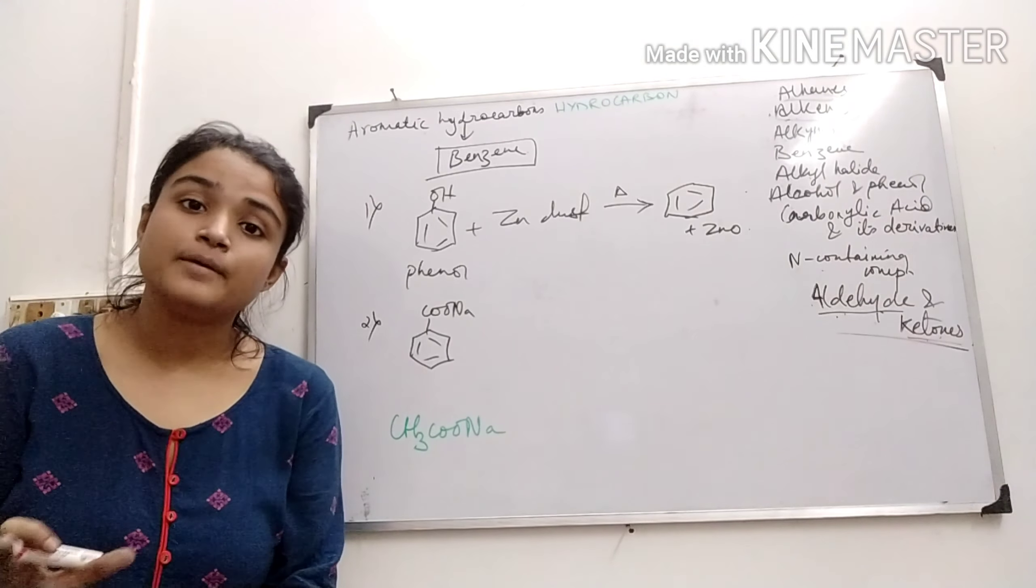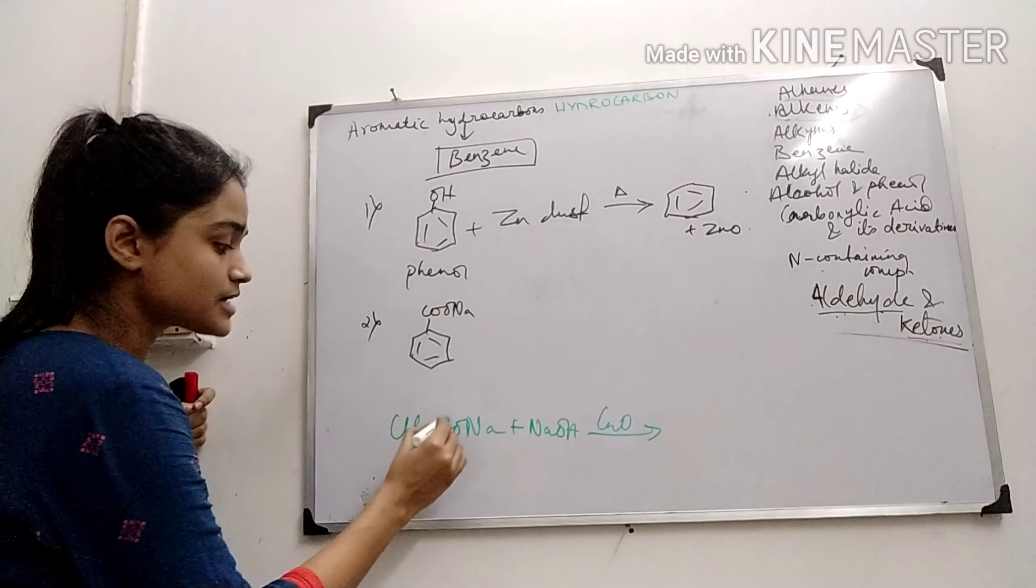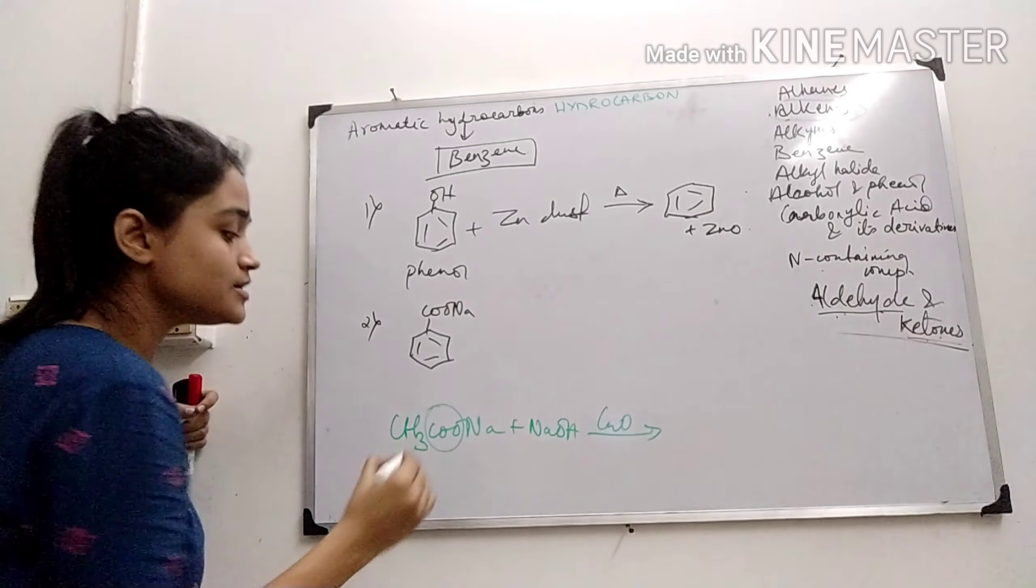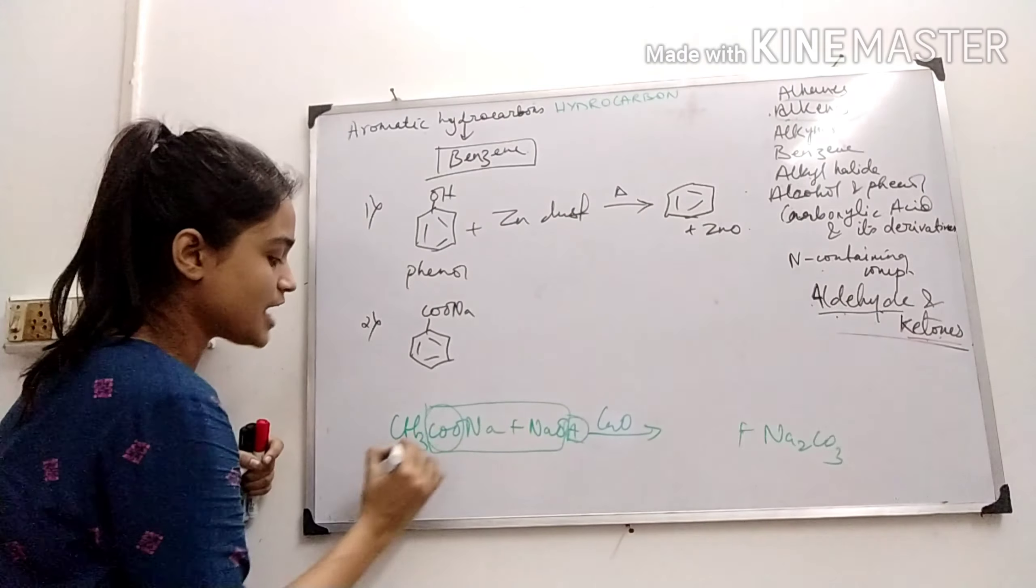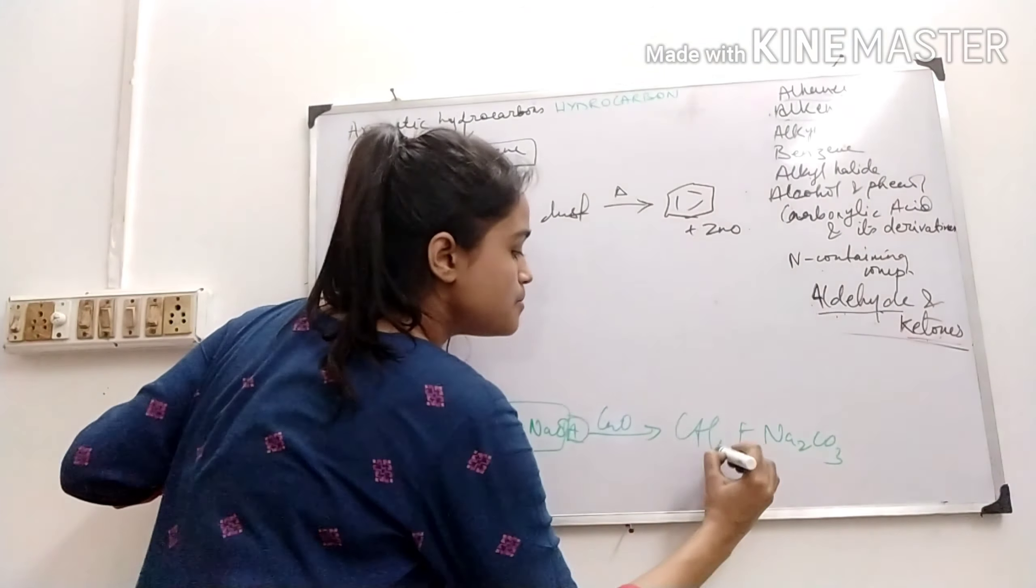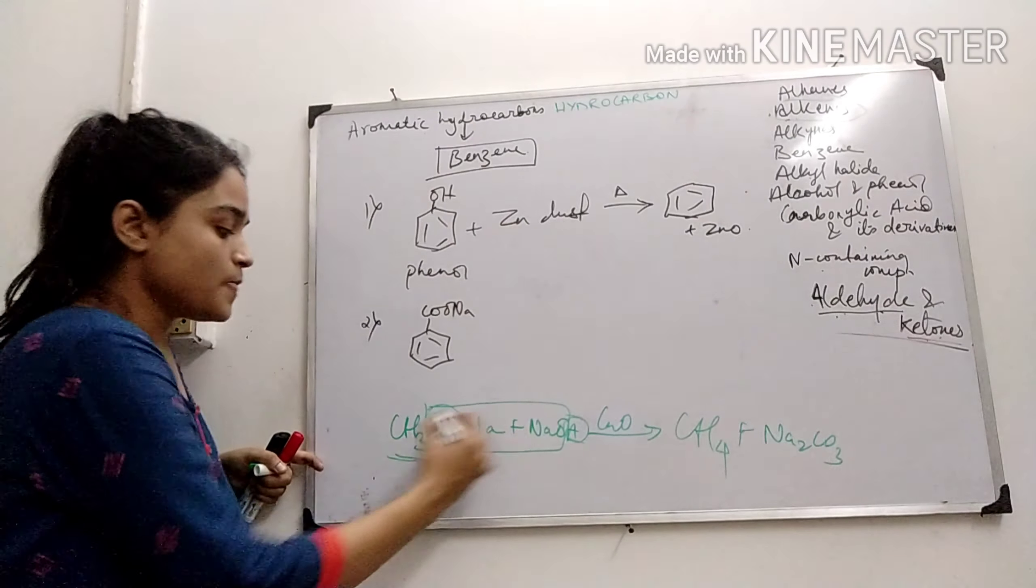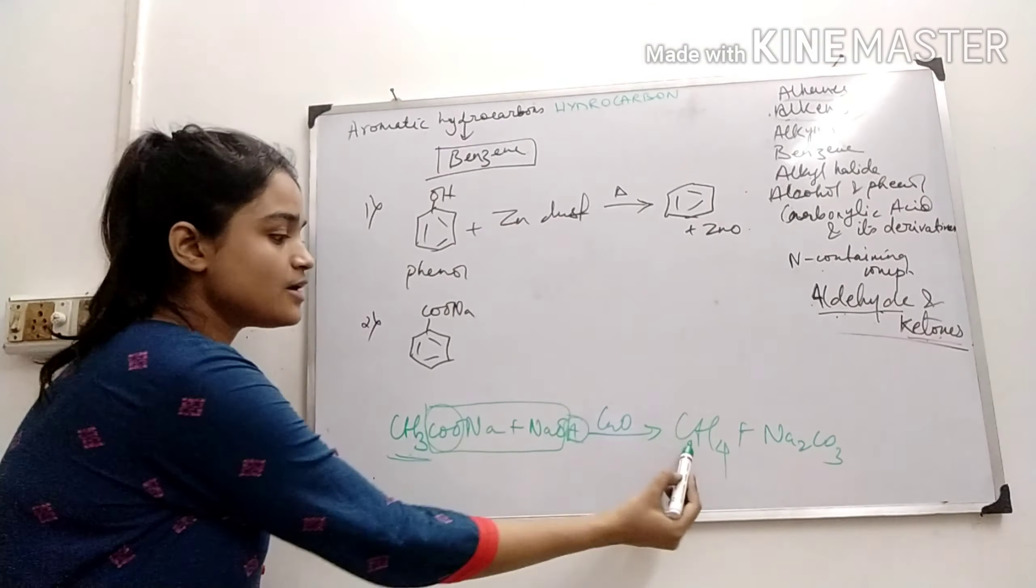Sodium ethanoate, I was adding soda lime, NaOH and calcium oxide. This carbon dioxide was liberated in the form of sodium carbonate and remaining methane was left behind. So this part was removed, only this H and CH3 forming methane. So we were getting one carbon less than the parent reactant.